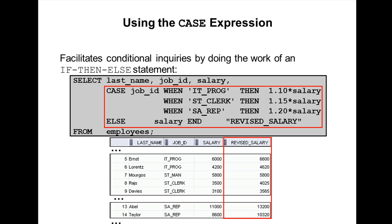In this slide, the value of job_id is decoded. If job_id is IT_PROGRAMMER, then it is increasing salary by 10 percent. If job_id is CLERK, the salary increase is 15 percent. If job_id is SALES_REPRESENTATIVE, the salary increase is 20 percent. For all other job roles, there is no increase in salary.